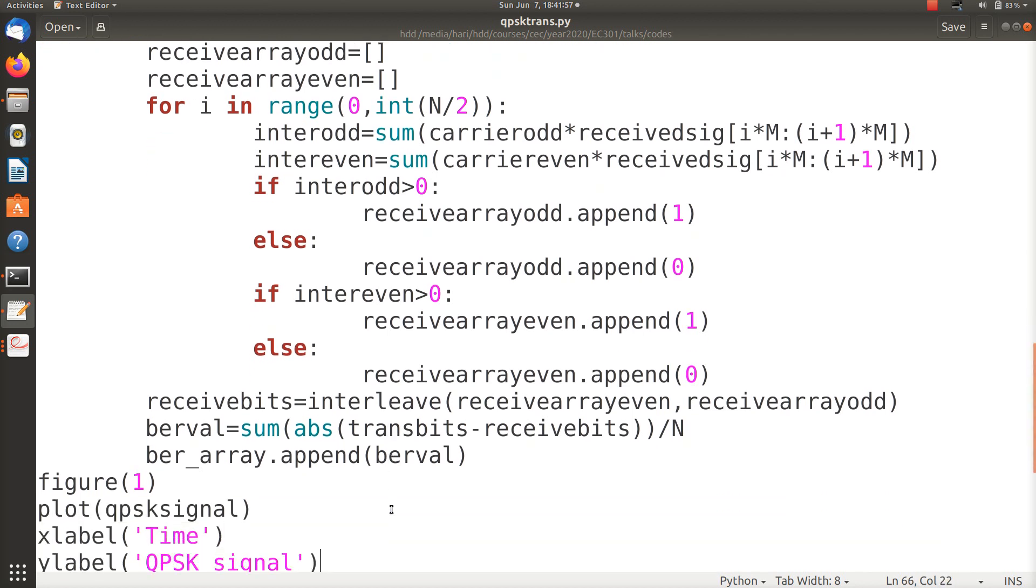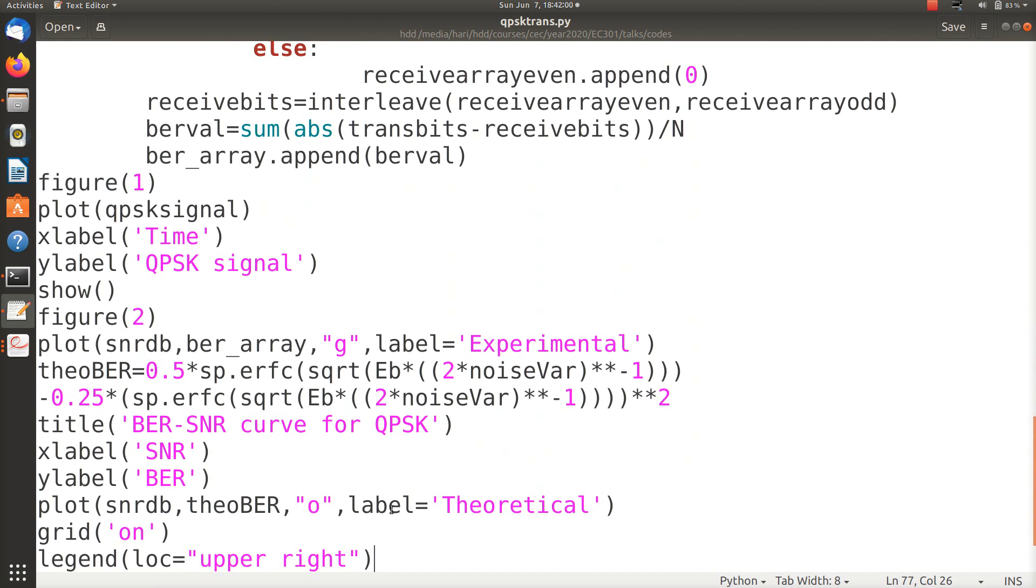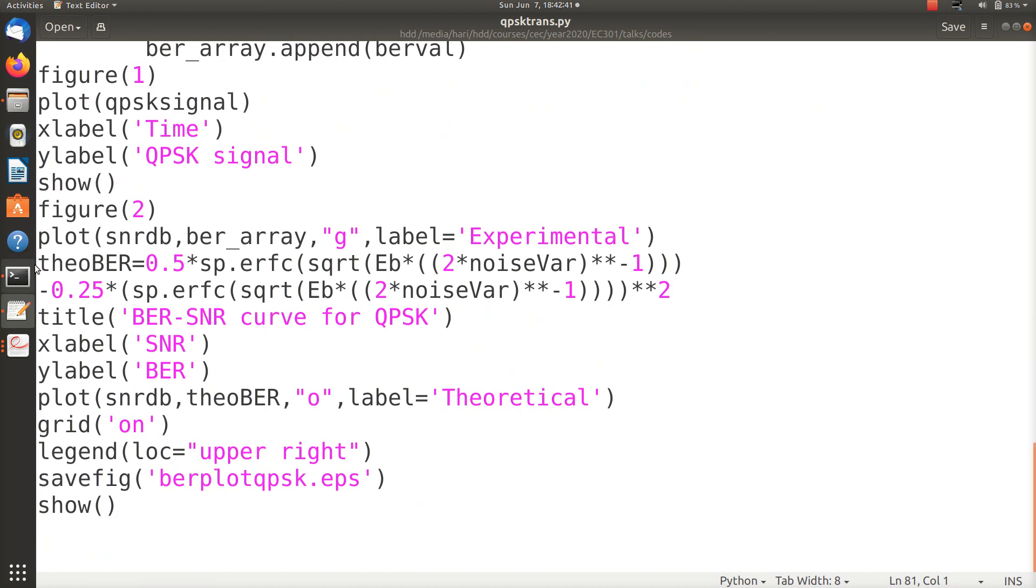In the first figure I plot the QPSK signal, and this is to observe the change in phase. Then I plot the BER array against SNR in dB. Once I have the BER array plotted, I have to check with the mathematical equation I developed. So this is actually an expanded form of that equation I derived. If you expand that equation you will get the theoretical BER. Now I plot the theoretical BER over the same plot to compare the practical BER with the theoretical one.